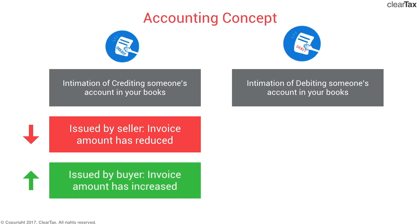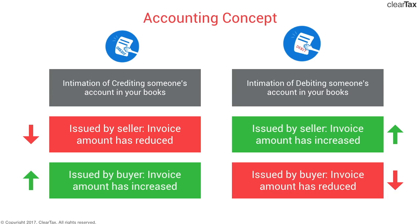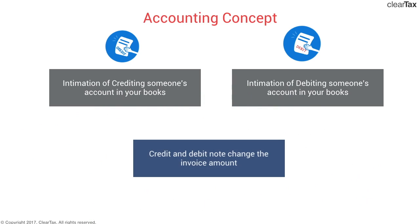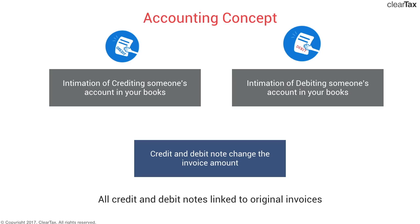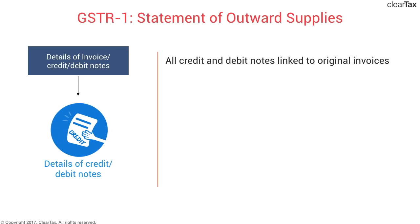If a credit note is issued by the buyer, the opposite is true — the invoice amount has increased. In a buyer's books, the seller is a liability, and crediting the seller's account means the buyer has to pay more to the seller. A debit note issued by the seller implies the invoice amount has increased; issued by the buyer, it implies the invoice amount has reduced. In short, a credit or debit note is issued whenever there is a change in invoice amount, and since a change in invoice means a change in tax, this must be tracked by the government through returns.